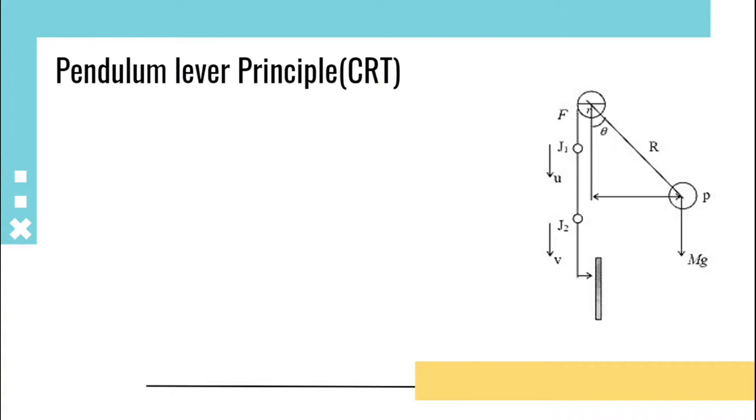Let us take moment about pivot point. That is, F into R equals to Mg into X, that is equals to MgR sin θ. Considering R, M, G, and small r are constant, F proportional to sin θ. That is, F is the tension in the specimen.